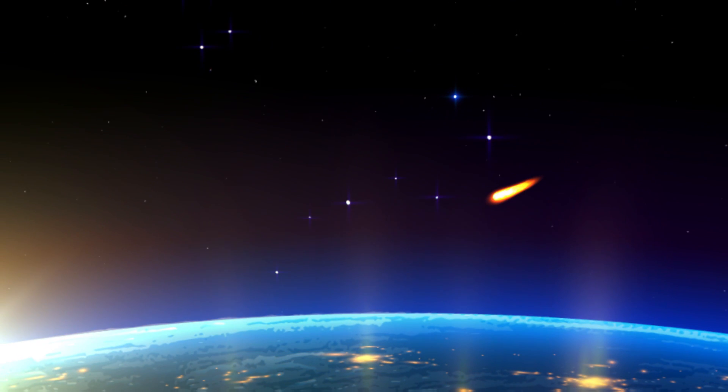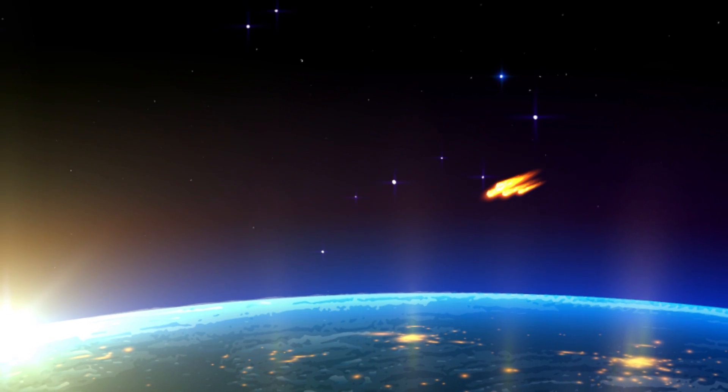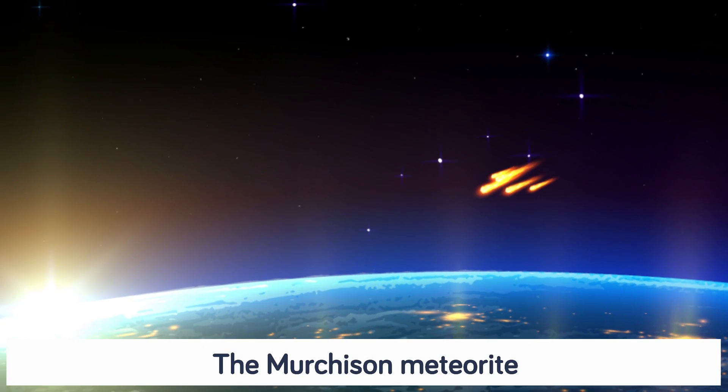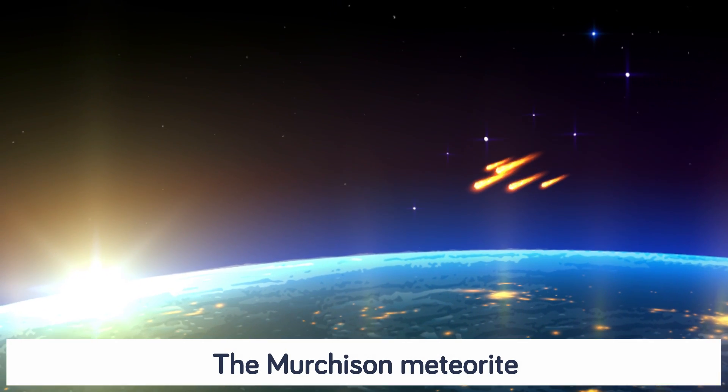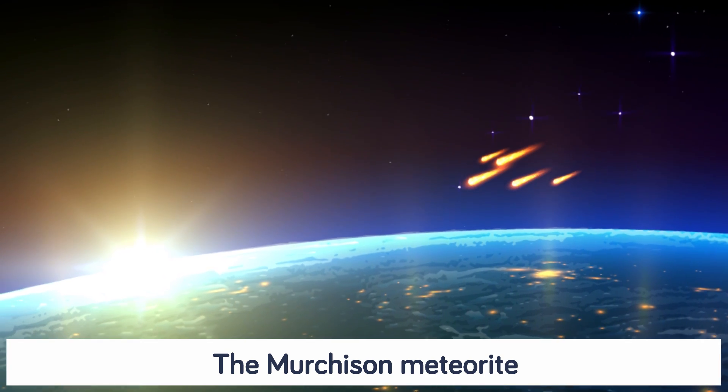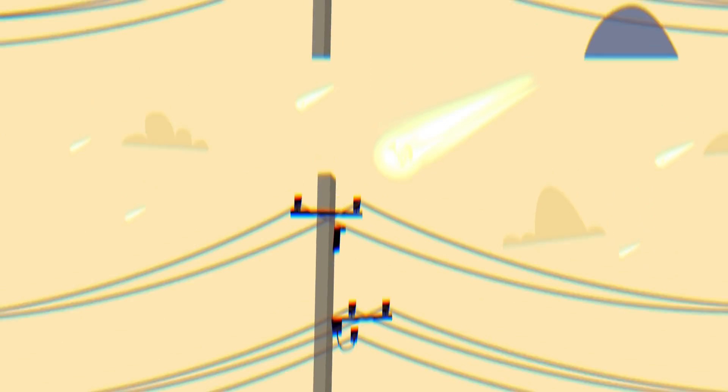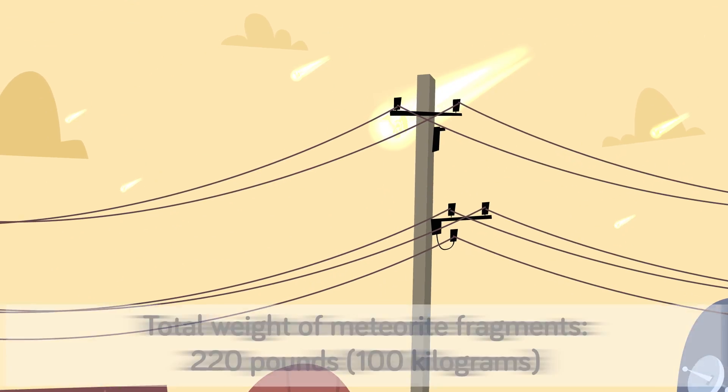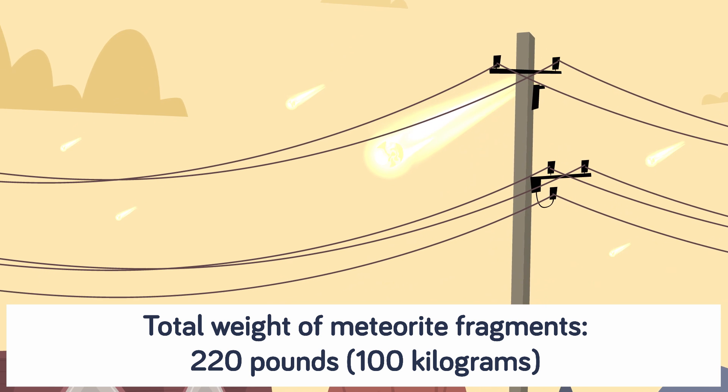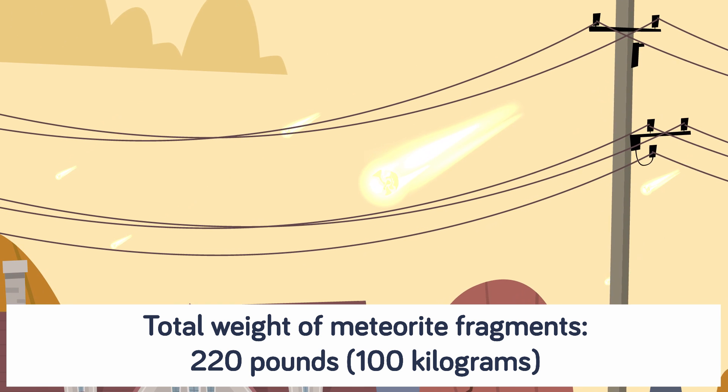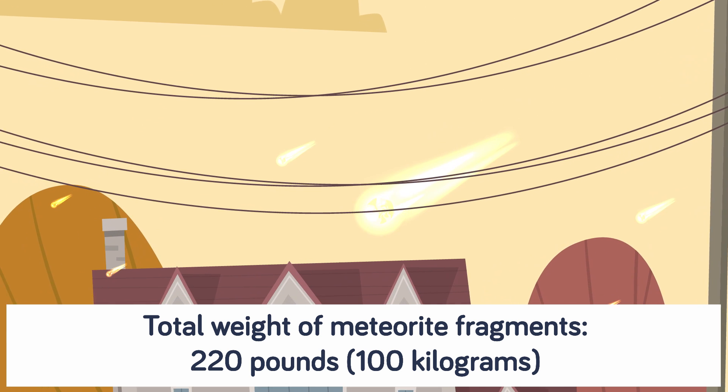That rock broke off into lots of fragments, with one bit going right through a roof and landing in some hay. The total weight of all the bits that were found was almost 220 pounds. It became one of the most studied meteorites ever, and one of the reasons why was that it contained a lot of organic compounds. The question scientists have been asking since then is, did life on Earth come from outer space?